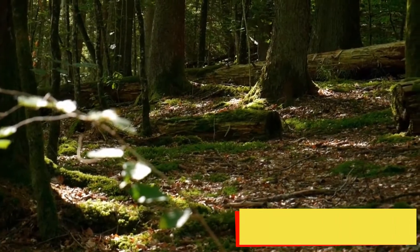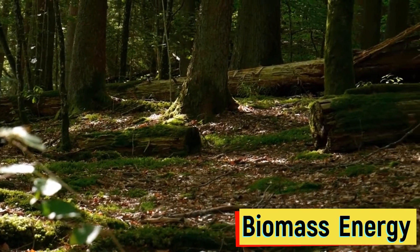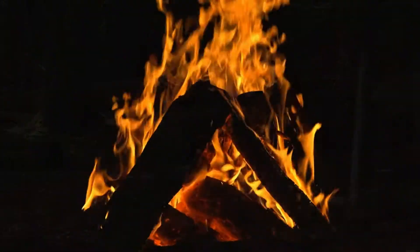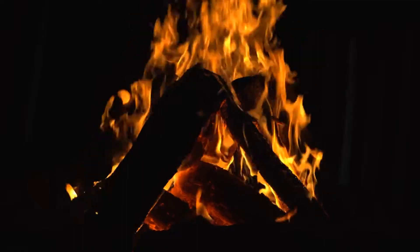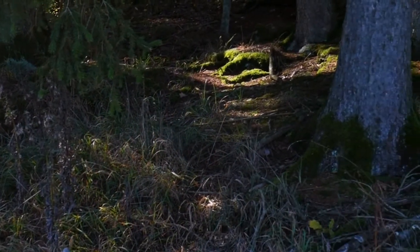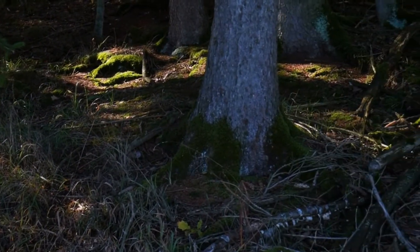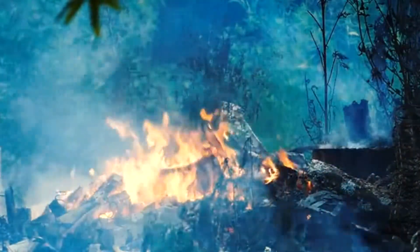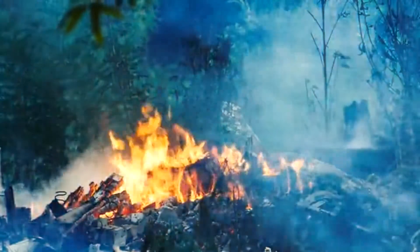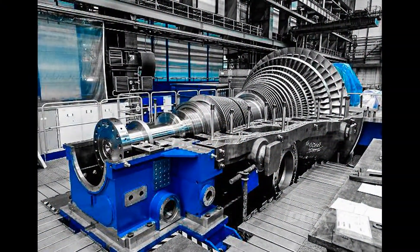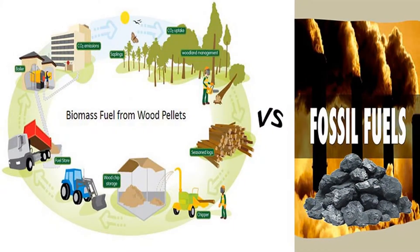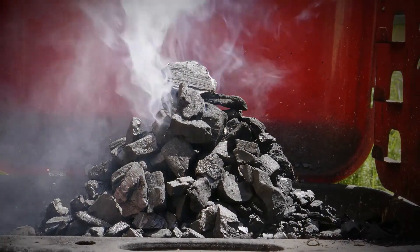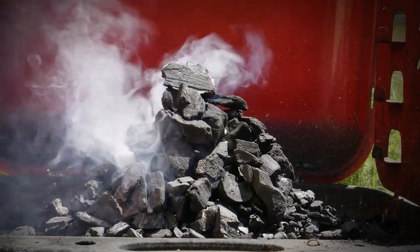Biomass energy: Biomass fuels are recently living organic matter like plants and animals that are burned for power. It is an organic material that comes from crops, waste wood, and trees. When biomass is burnt, chemical energy is released as heat and it can generate electricity with a steam turbine. Biomass is a renewable fuel and is a greener alternative to coal and other fossil fuels for producing electricity.